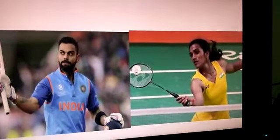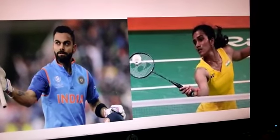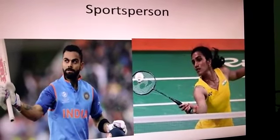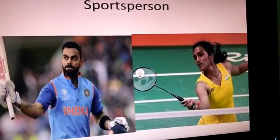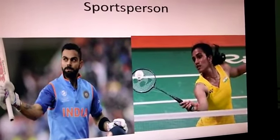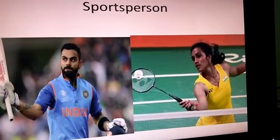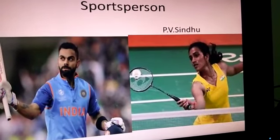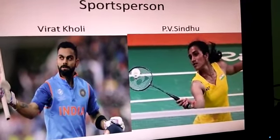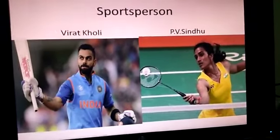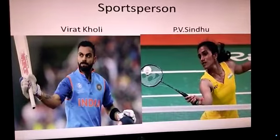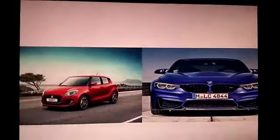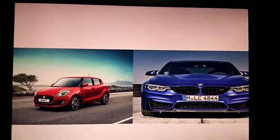Look at this picture — who are they? We call them 'sports persons.' Whatever games they play, we call them sports persons — that is a common name given to these persons. But how do we give a specific name? This person's name is Virat Kohli and she is PV Sindhu. These particular names of persons are proper nouns.